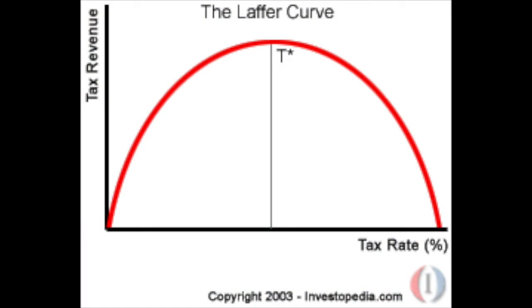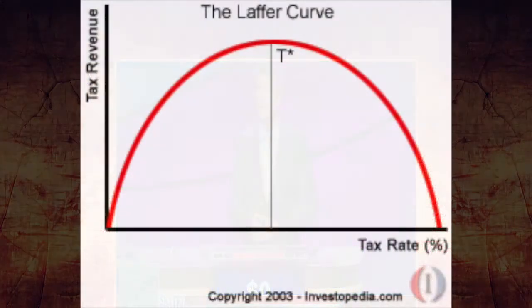Describe the graph shown in the previous image. What is known as the Laffer Curve. The Laffer Curve was invented by me. A simplified view of the theory is that tax revenues will be zero if tax rates were either 0% or 100%, and somewhere in between 0% and 100% is a tax rate which maximizes total revenue. My postulate was that the tax rate that maximizes revenue was at a much lower level than previously believed.